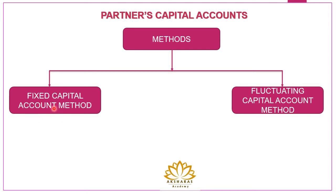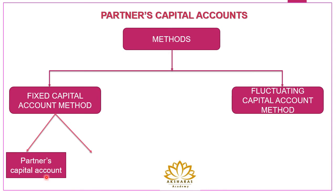One is the fixed capital account method and the other is the fluctuating capital account method. Under the fixed capital account method the capital accounts of the partners will not change year after year unless a partner withdraws cash or introduces additional capital into the firm. Under this fixed capital account method we open two accounts — one is the partners capital account and the other is the current account.